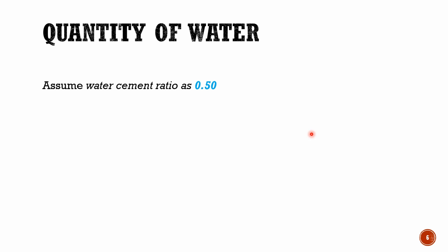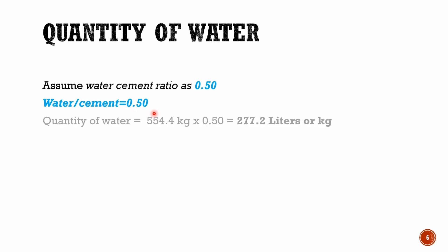Assume the water-cement ratio as 0.50. To get the quantity of water, we have to multiply cement quantity with 0.50. Therefore, quantity of water equals to 554.4 kg, that is weight of cement, multiplied by 0.50, that is water-cement ratio. This equals 277.2 liters, or you can say kg.